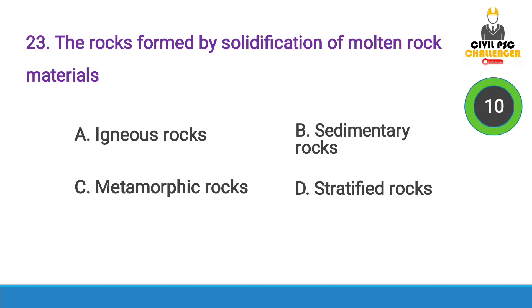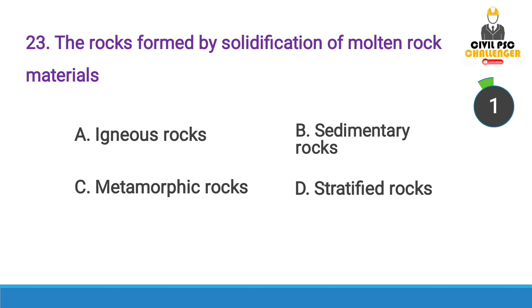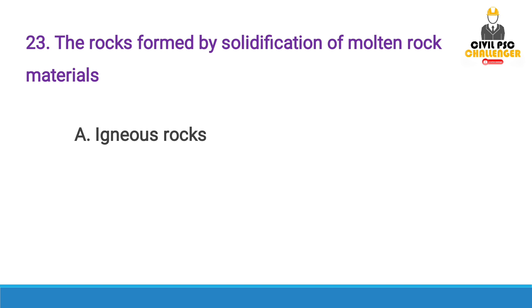Next question: The rocks formed by solidification of molten rock materials are — Answer option A, Igneous Rocks.